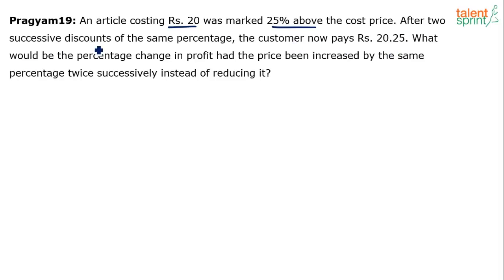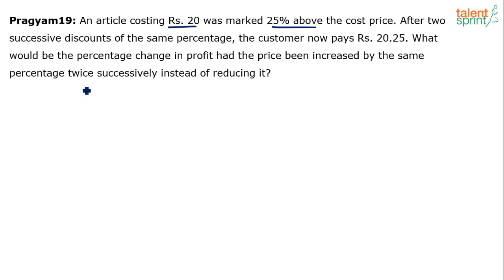So there were two successive discounts on the marked price. We get the marked price from the cost price based on the given percentage. Then on that marked price, there were two successive discounts. The question asks: what would be the percentage change in profit had the price been increased by the same percentage twice successively instead of reducing it?